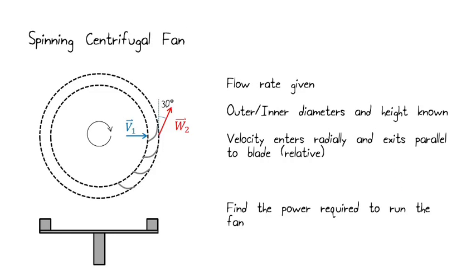Then the second problem is we're going to look at a centrifugal fan. So, here's a side view of this and a top view. And what we know here is a certain flow rate of air enters and leaves the blades. We know the geometry of the blades here in terms of diameter and the height of the blades. And we want to find the power required to run the fan with these known velocities and flow rates. So, these are two interesting problems that we're going to work on in class. Thanks for your attention. And I look forward to working on them with you.